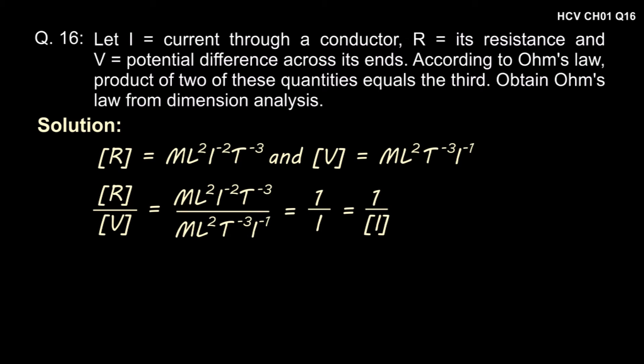Dividing the dimension of resistance by dimension of potential difference, we get 1 by dimension of I. So, dimension of potential difference V must be equal to dimension of I into dimension of R and thus V must be equal to I into R.